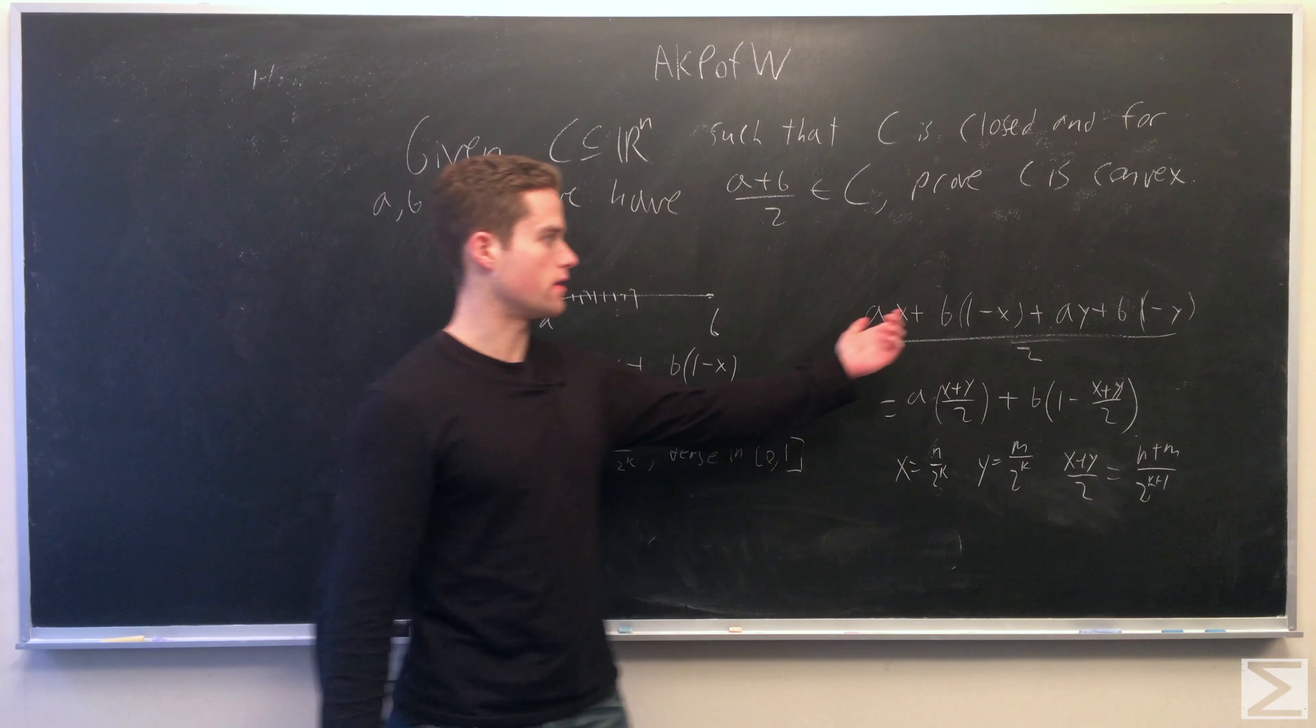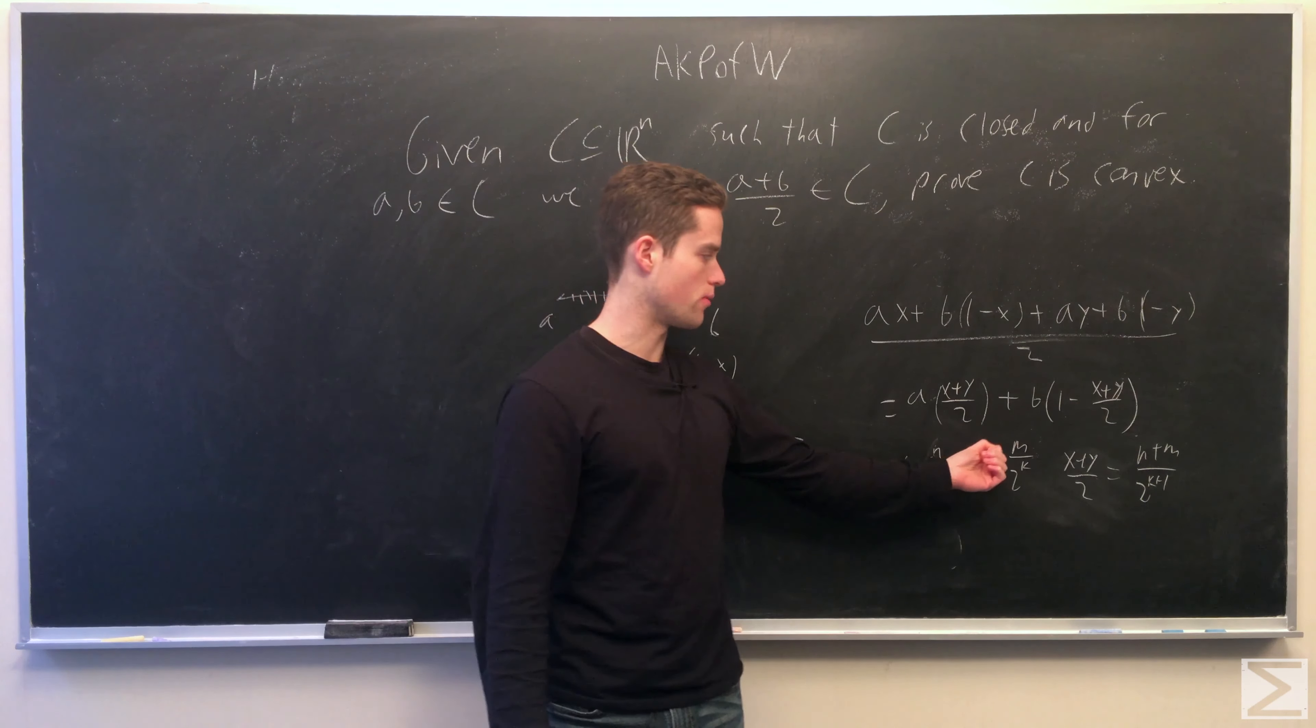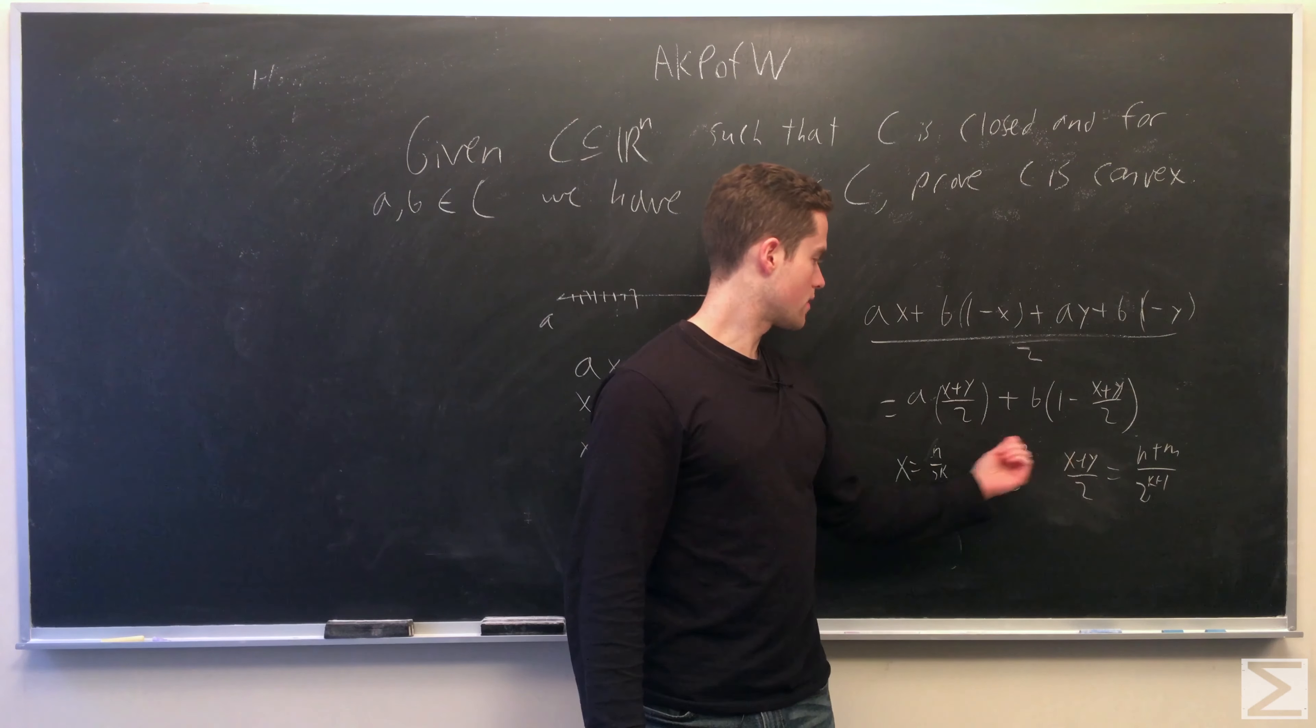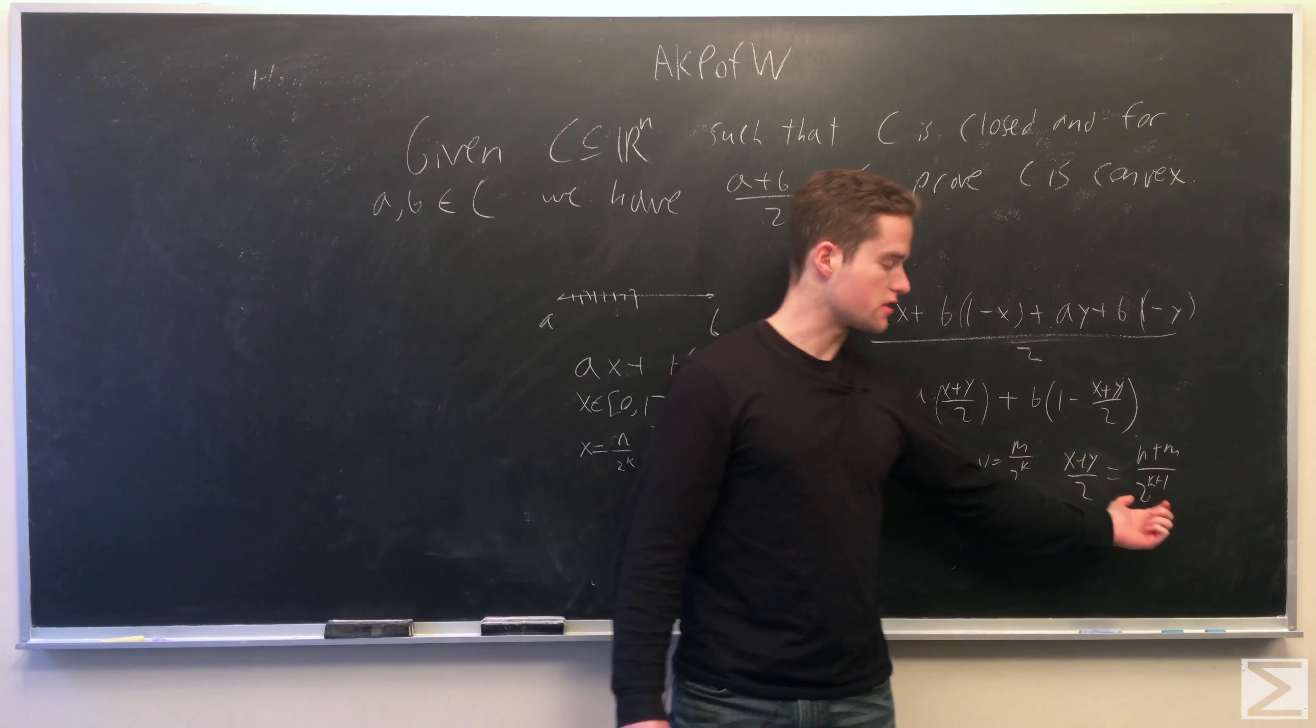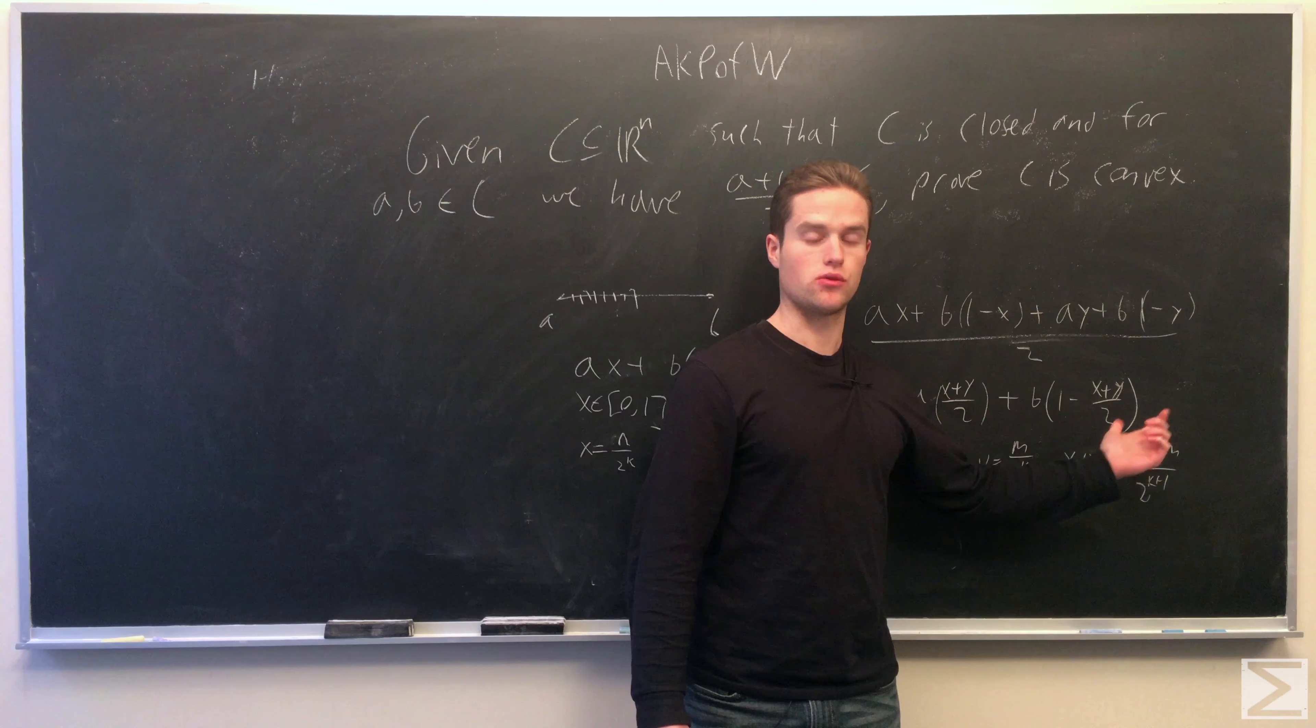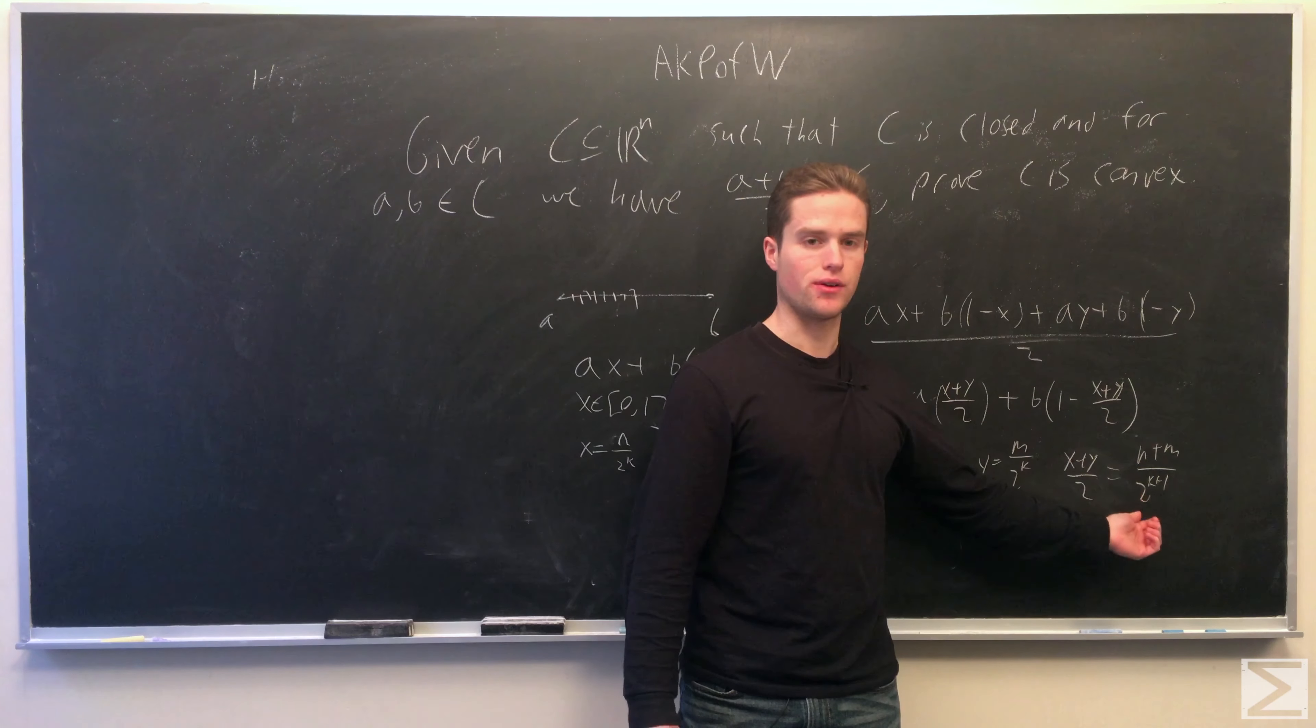So to do this, we're going to take the midpoint of two arbitrary points, say x and y, x of the form n over 2^k, y of the form m over 2^k, where n and m are both between 0 and 2^k. When we take the midpoint, we get (x plus y) over 2, which equals (n plus m) over 2^(k+1). So by taking appropriate n and m, we can have the top be any point between 0 and 2^(k+1), so we have all dyadics with denominator 2^(k+1).